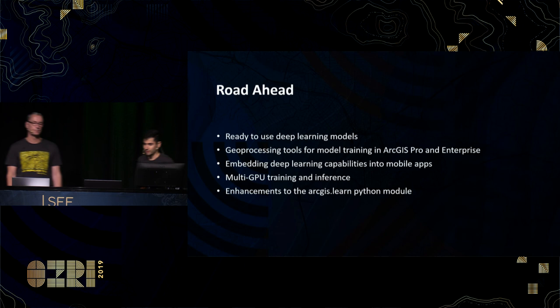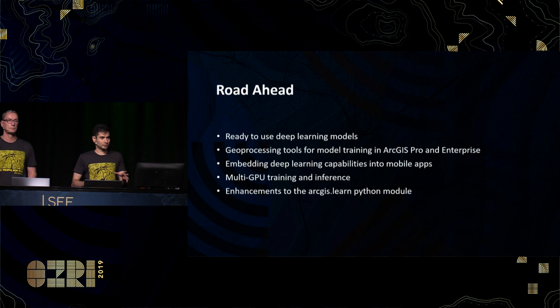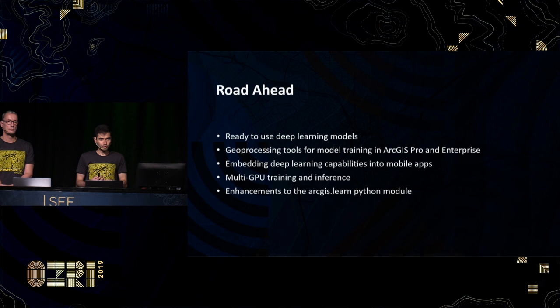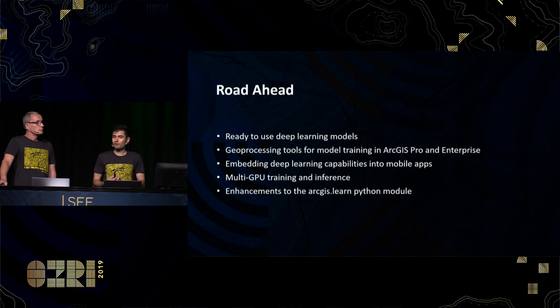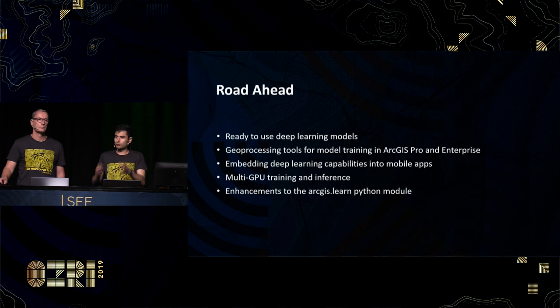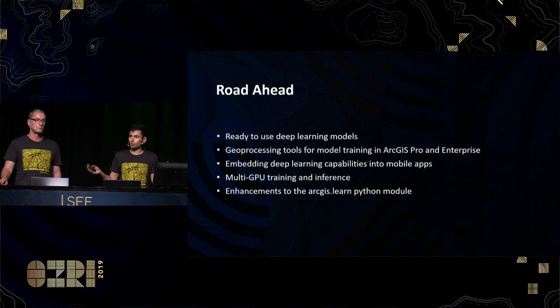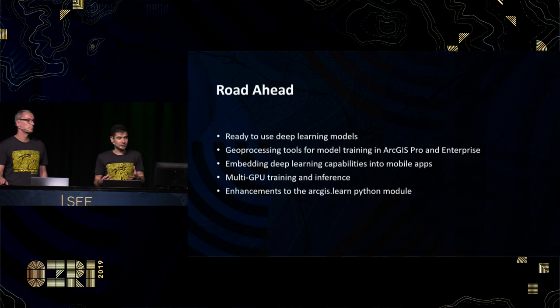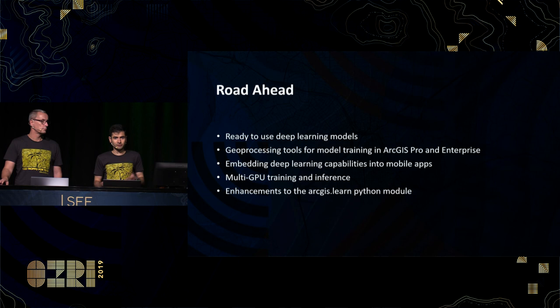Before we wrap up, let's talk about what's coming next for deep learning in ArcGIS. That middle portion of our workflow — the most computationally intensive part — will soon be addressed by a library of ready-to-use models for the most common object detection use cases, such as detecting pools in backyards or solar panels on roofs. Additionally, new model training geoprocessing tools will be built directly into ArcGIS Pro and ArcGIS Enterprise, so you'll be able to do the entire machine learning workflow from beginning to end without leaving the ArcGIS environment. Finally, deep learning capabilities are coming to mobility applications like Collector, allowing for deep learning-enabled data collection workflows in the field.